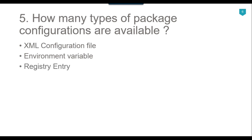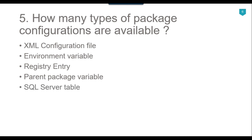The third is the registry entry, which can also be used to get new values for SSIS variables. The fourth is the parent package variable, where values can be provided to child packages from the parent package at runtime. The fifth and last is the SQL Server table, which can be used to provide values to different properties of the SSIS package and to SSIS variables at runtime.